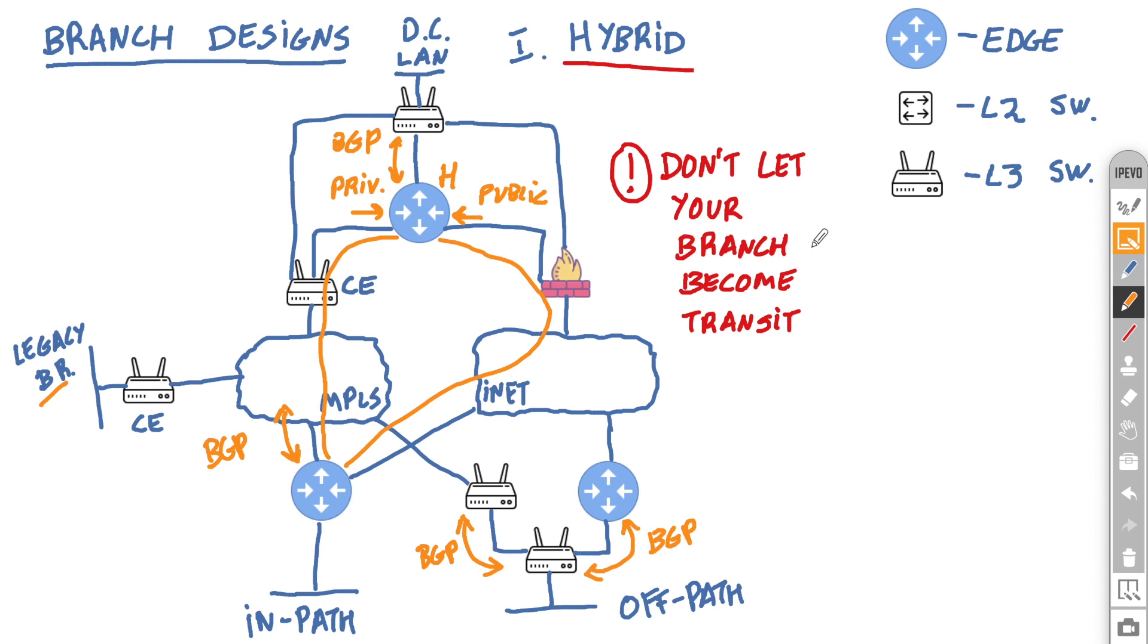So the idea is simple. If you are doing any sort of underlay routing, do not let your branch become a transit site. And in order to do that in an easy fashion, there are two main methods we will be using. First of all, for in-path designs here, we will use a feature that's called the uplink flag. And we will mark on the edge this neighbor here that we do the BGP peering with as an uplink neighbor.